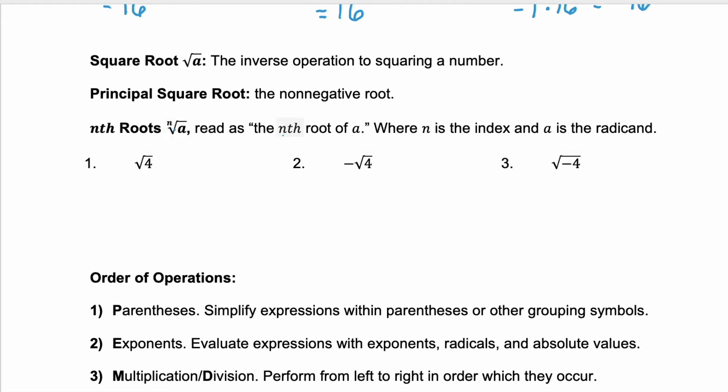And you'd read that the nth root of a. I was thinking about doing a cube root. So if you have an index of 3, and a is your radicand, this would be the cube root. And once you get above 3, you would say the 4th root, the 5th root, and so on.